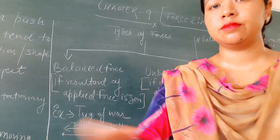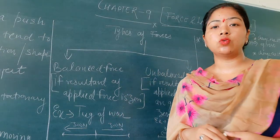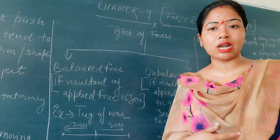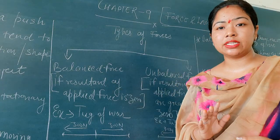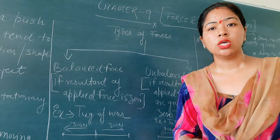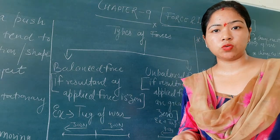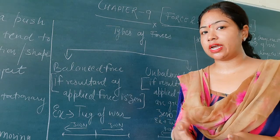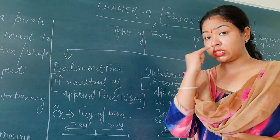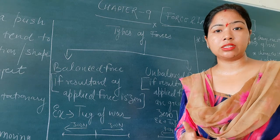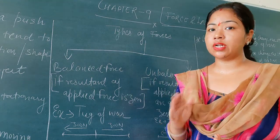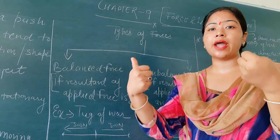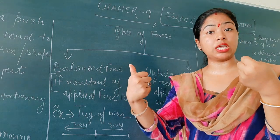Now, whenever we talk about force, there are two types of forces that we study in Class 9: one is balanced force and the second one is unbalanced force. The simple example of these two types is tug of war. There are two situations in tug of war. In the first situation, two teams are on opposite sides and they apply force, but neither team is able to move the rope.